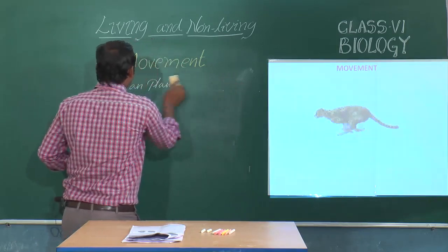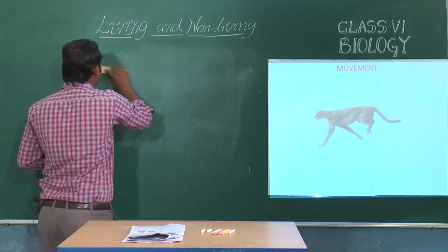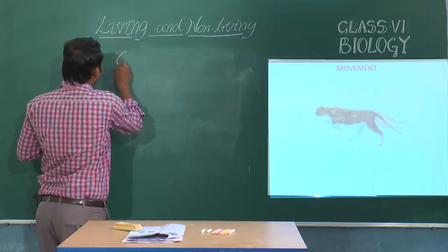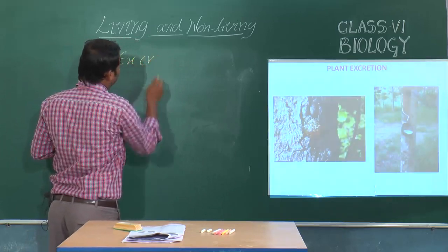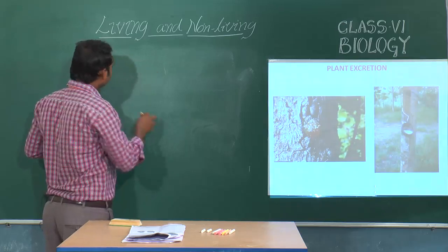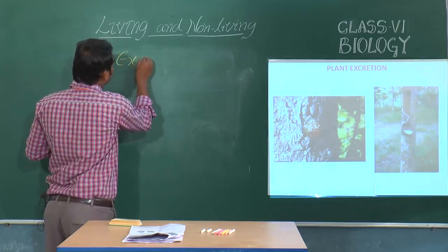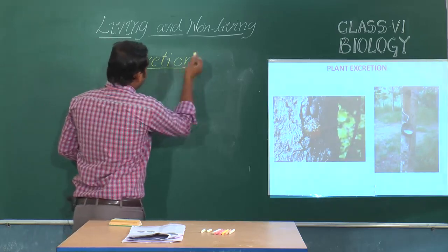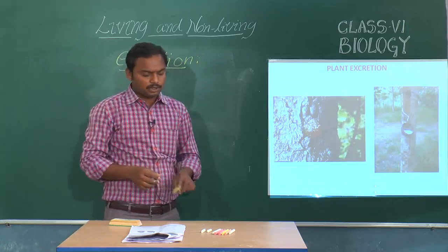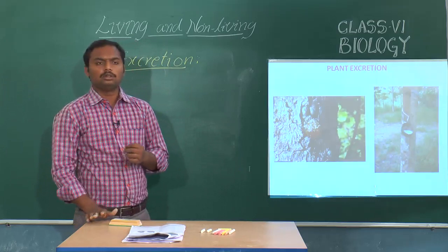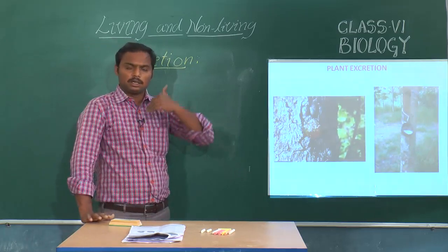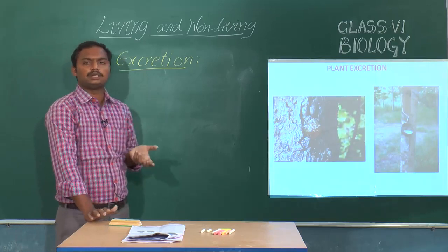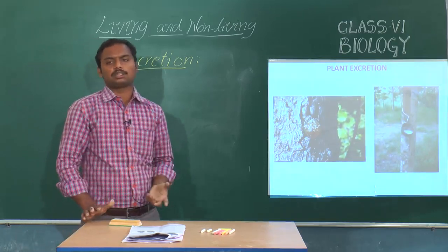Let us discuss the next important characteristic feature of living forms — that is excretion. Excretion is one of the important characteristic features of living forms. As we take food and breathe, we release gaseous waste materials like carbon dioxide. When we take food, various kinds of nitrogenous products are produced as waste materials.